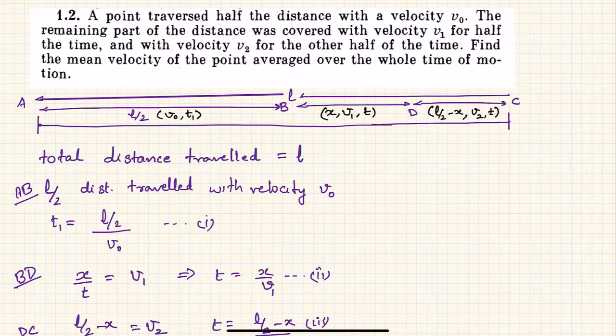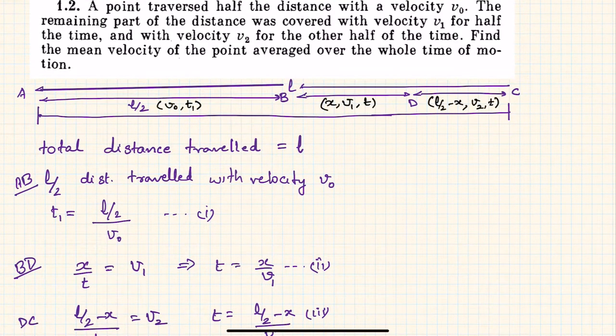Welcome friends to this new session on problem solving. The question is: a point traversed half the distance with velocity v0. The remaining part of the distance was covered with velocity v1 such that for half the time